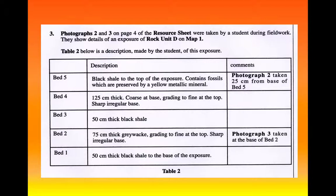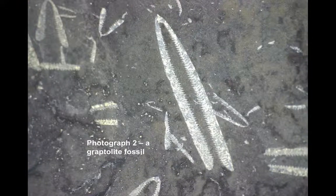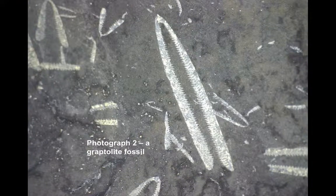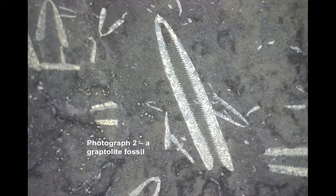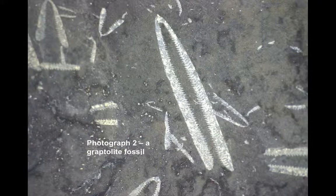I'll show you the photographs in a couple of moments. Okay, there are two additional photographs which add to the information about the sequence of sediments. This is photograph two, a picture of a type of fossil we call a graptolite. Can you find a symbol to represent that for the appropriate bed?